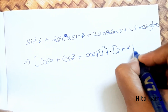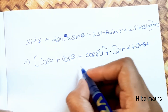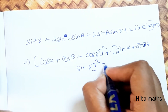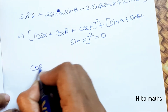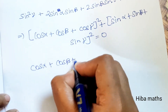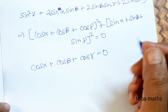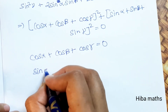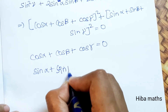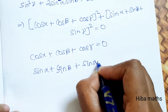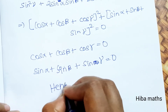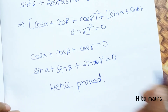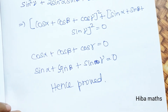From this, we get two results: cos α + cos β + cos γ = 0, and sin α + sin β + sin γ = 0. These are exactly what we needed to prove, so hence proved.